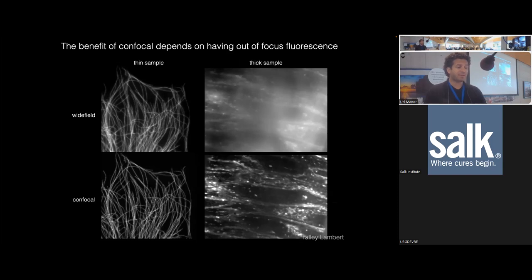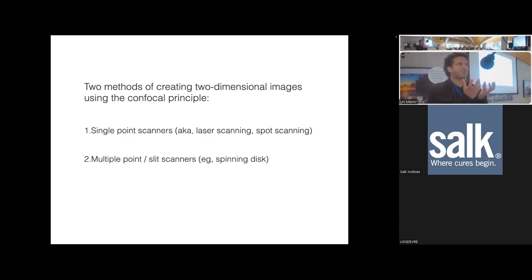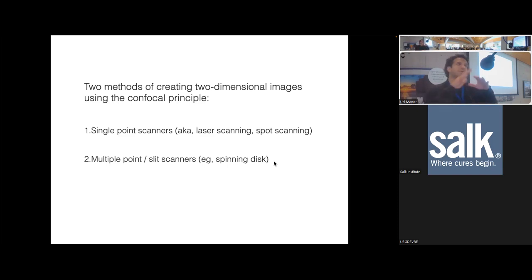This raises the question of whether you even need a confocal in the first place. It becomes really important when imaging thick samples — which is why we chose the cochlea as an example, an actual thick 3D piece of tissue. For thin samples, wide-field actually gives more signal. On a thick sample, the difference is night and day. There are two broad types of confocal microscopes: point-scanning (laser scanning) systems, which we'll use for most of the course, and multiple-point or spinning disc microscopes, which use a camera — an array of detectors — to capture a 2D image simultaneously, much faster.